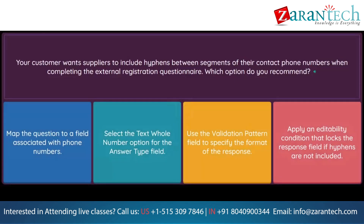Question. Your customer wants suppliers to include hyphens between segments of their contact phone numbers when completing the external registration questionnaire. Which option do you recommend? Option 1: Map the question to a field associated with phone numbers. Option 2: Select the text whole number option for the answer type field. Option 3: Use the validation pattern field to specify the format of the response. Option 4: Apply an editability condition that locks the response field if hyphens are not included.